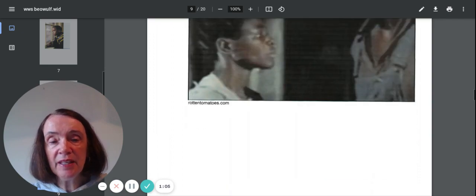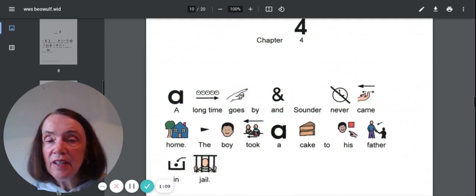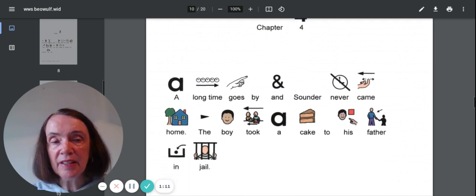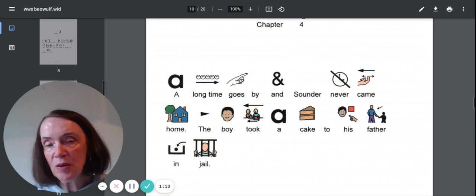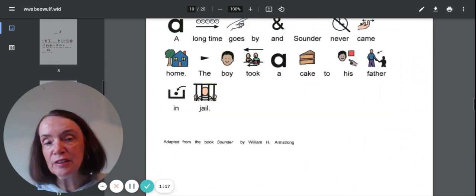Oh, there's a boy and a man. See what chapter four says. A long time goes by and Sounder never came home. The boy took a cake to his father in jail. Oh, dear.